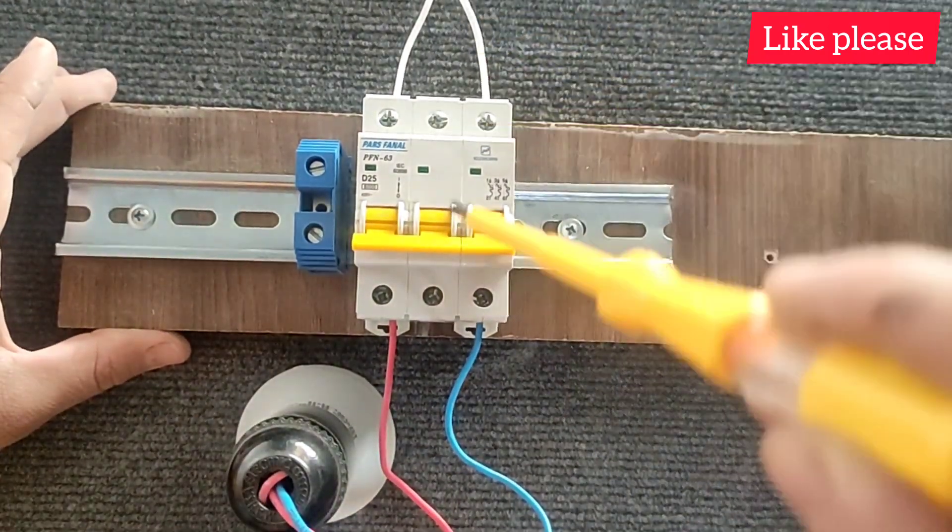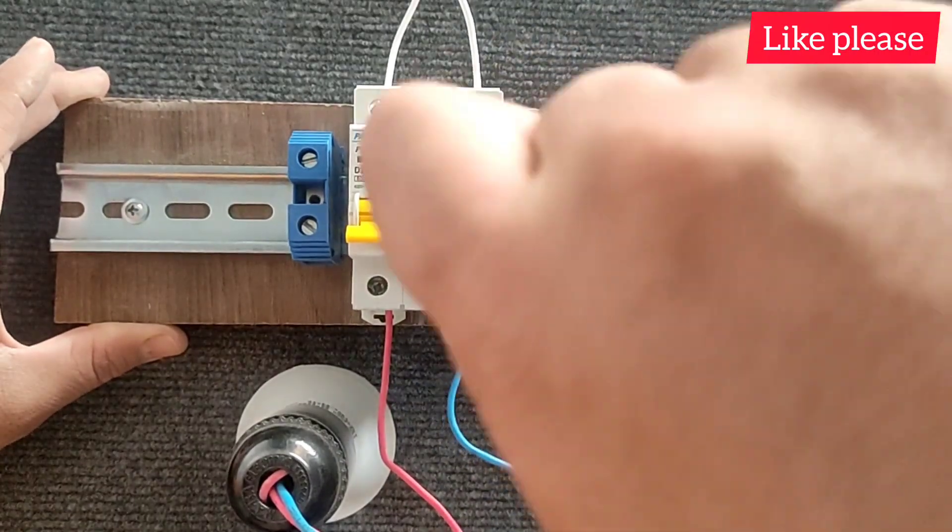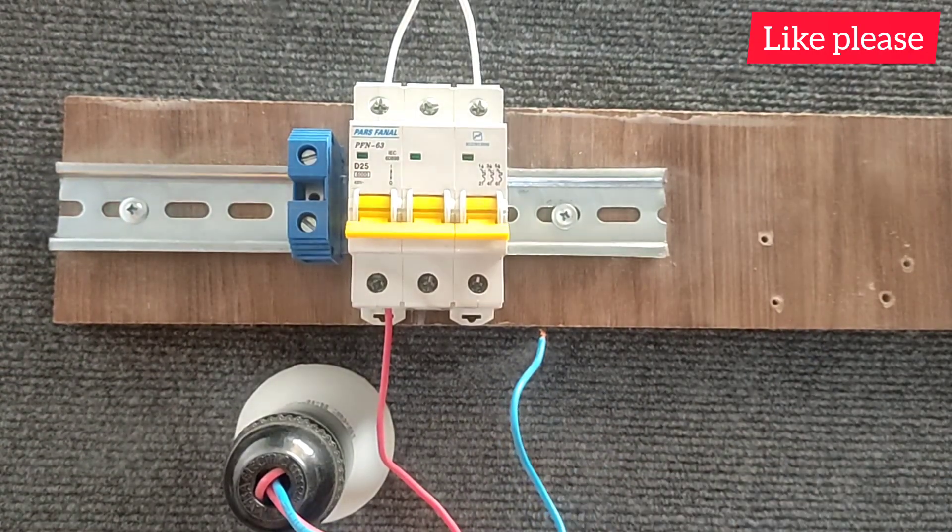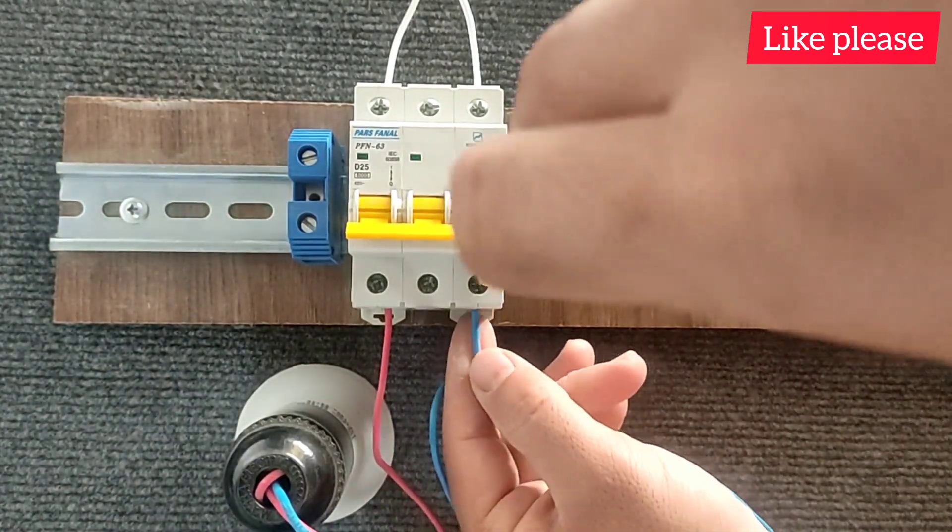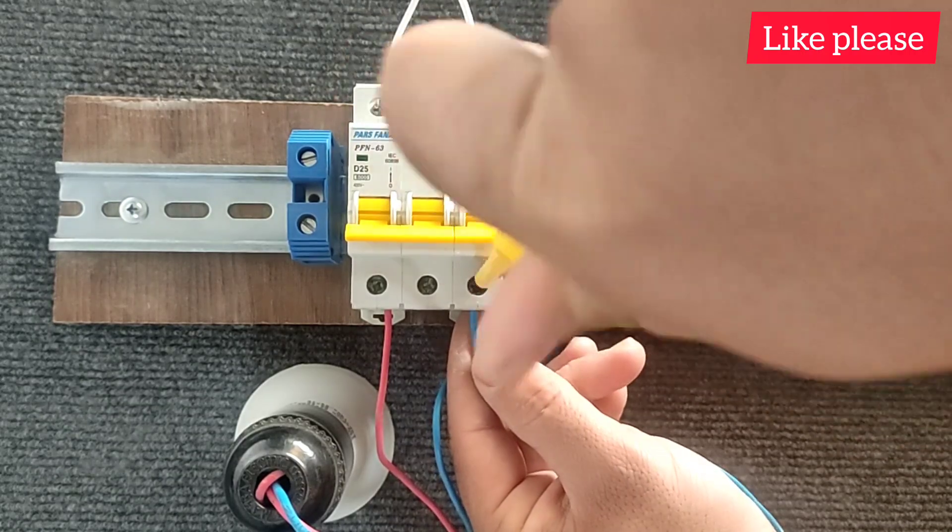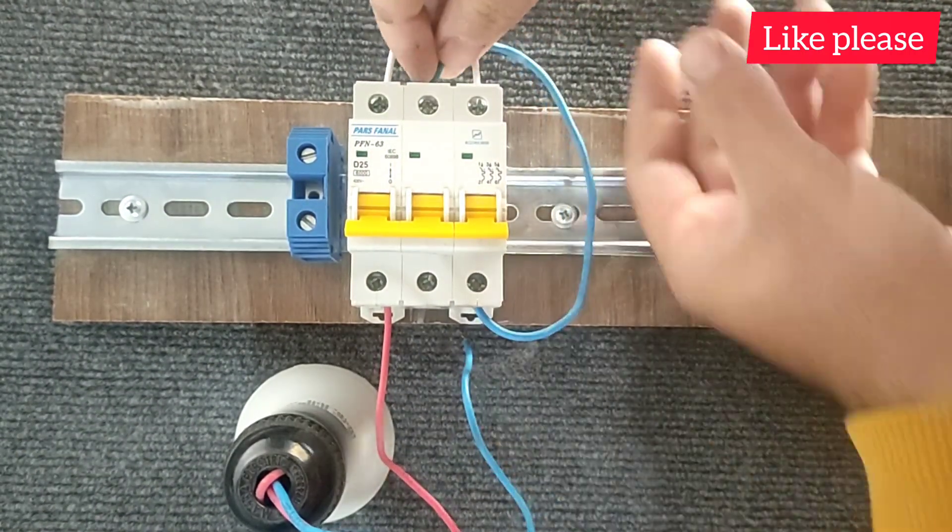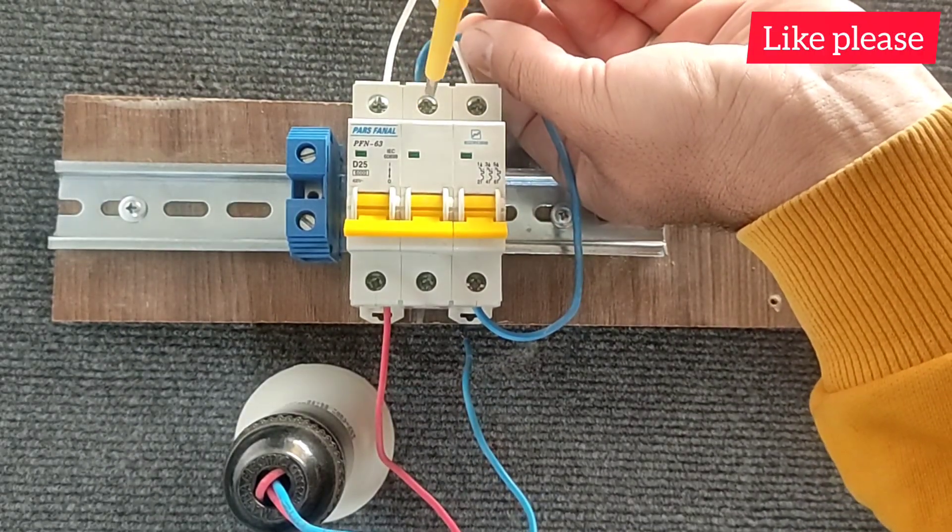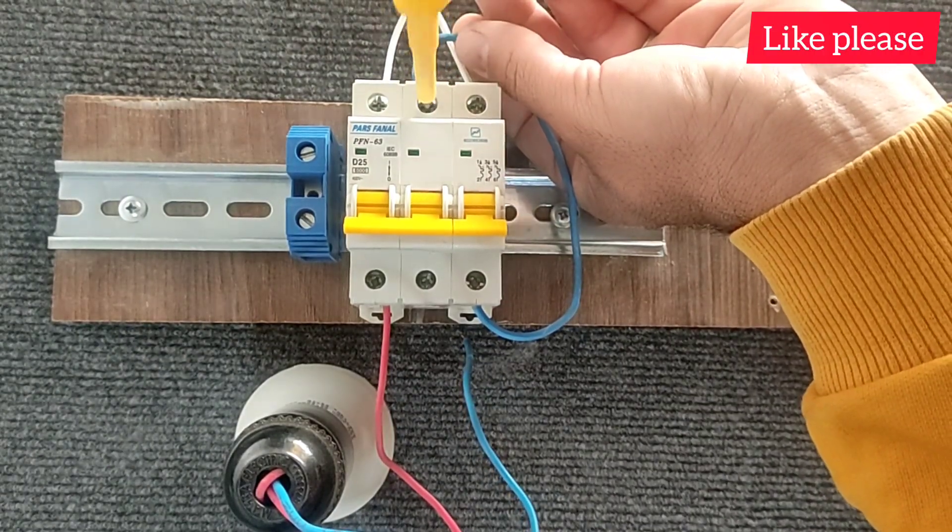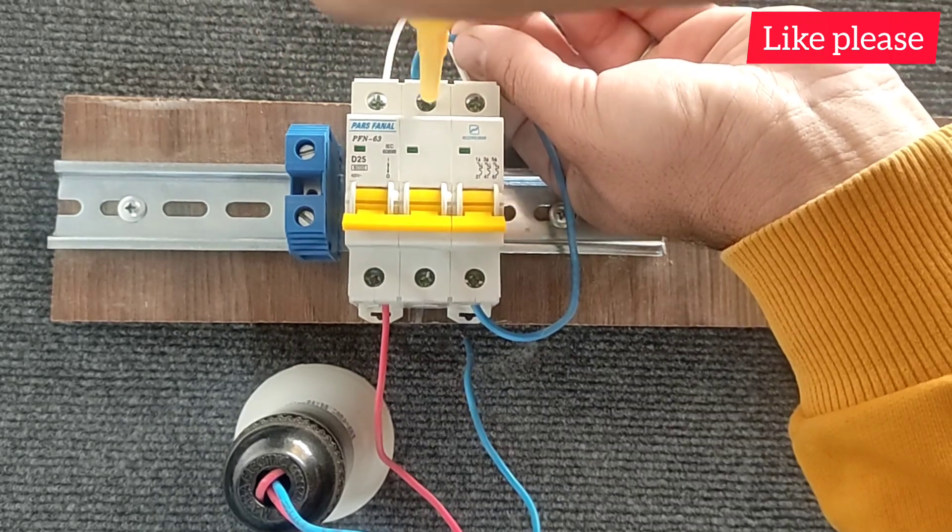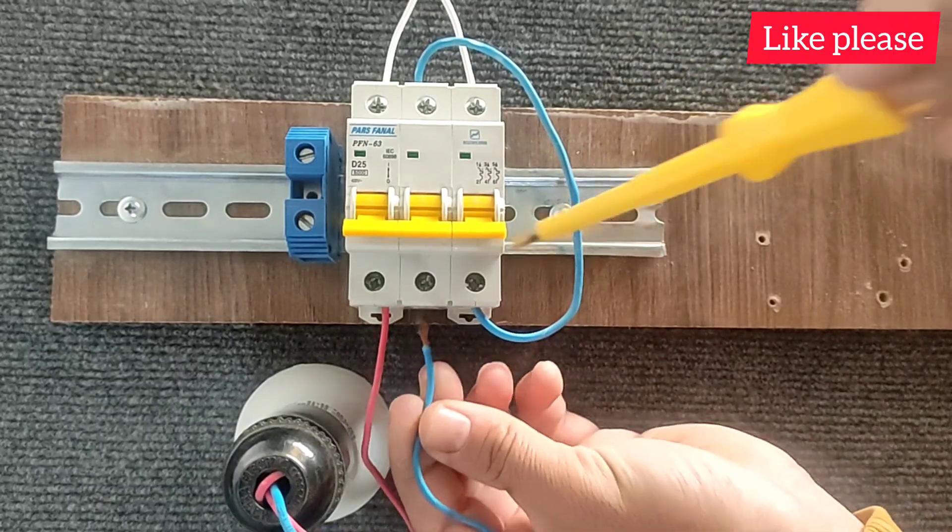In the next method we connect the phase wire to one of the blades and connect it from the output of the first blade to the input of the second blade, and connect the null wire to the third blade and then use it. This is the correct method and all three blades are involved in the current.